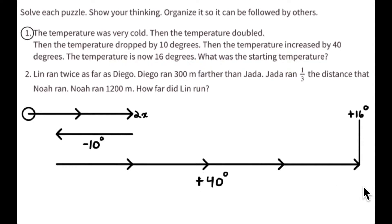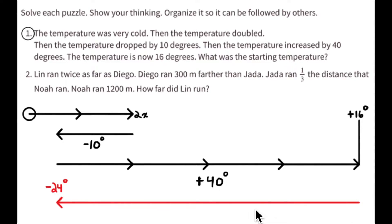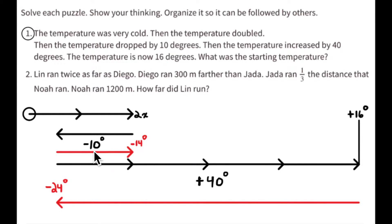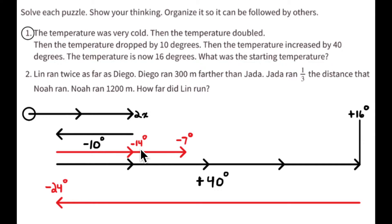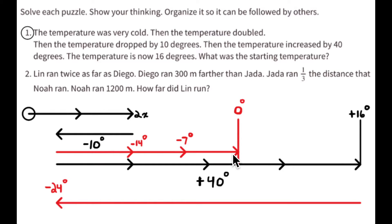So now we can work backwards. We know that to get to positive 16 degrees, 40 degrees was added, so we have to take away that 40 degrees. Positive 16 plus negative 40 degrees is negative 24 degrees. To get to negative 24 degrees, the temperature dropped by 10, so we add those 10 degrees back: negative 24 plus positive 10 equals negative 14 degrees. To get to negative 14, the temperature doubled, so negative 14 divided by 2 equals negative 7 degrees.